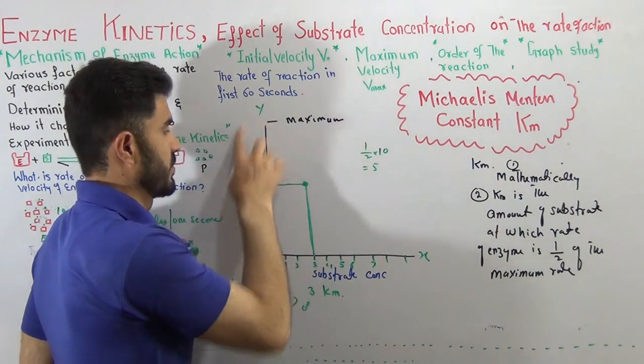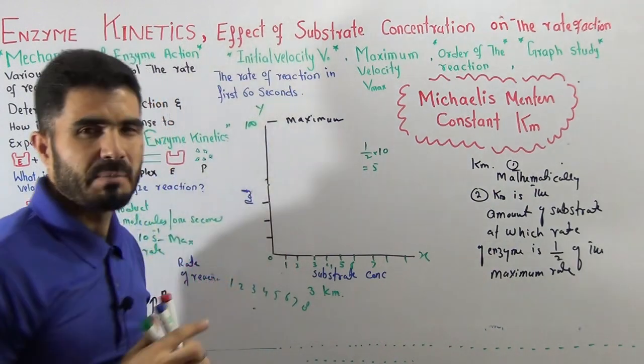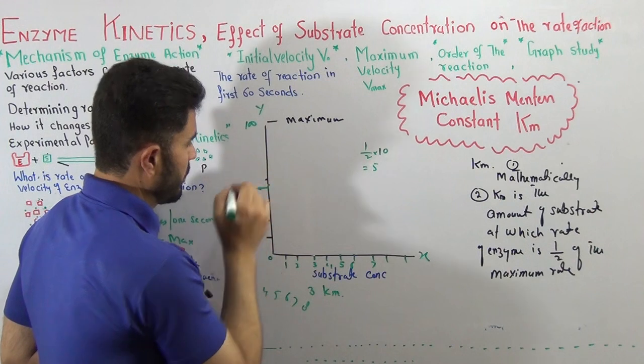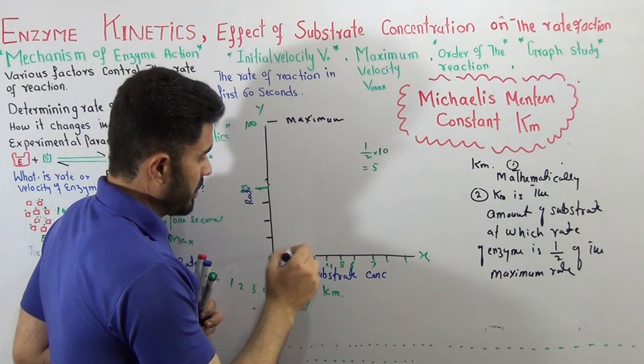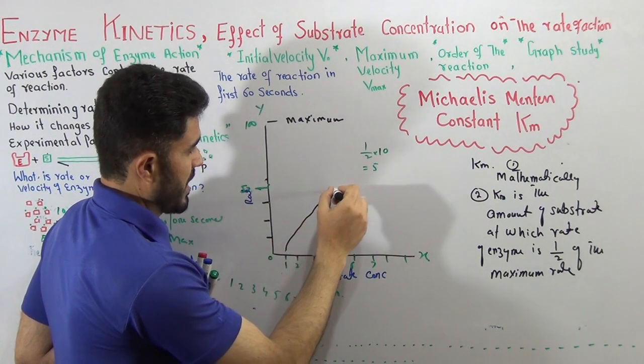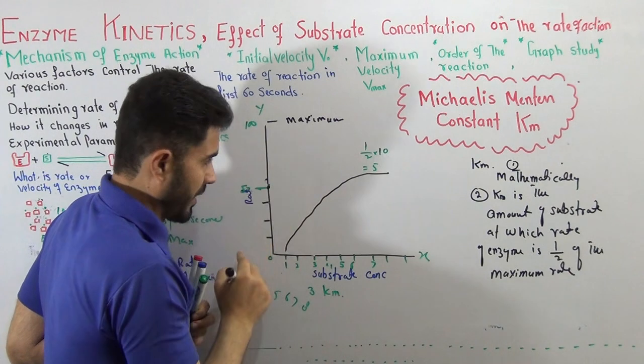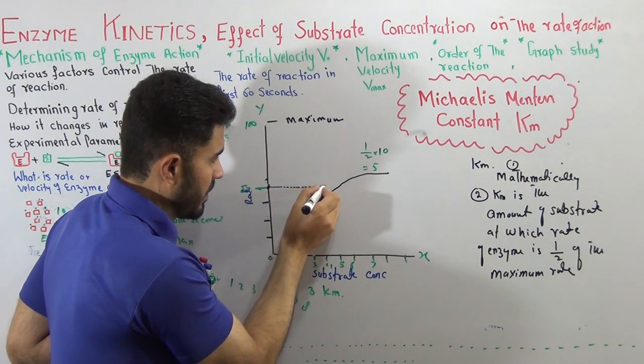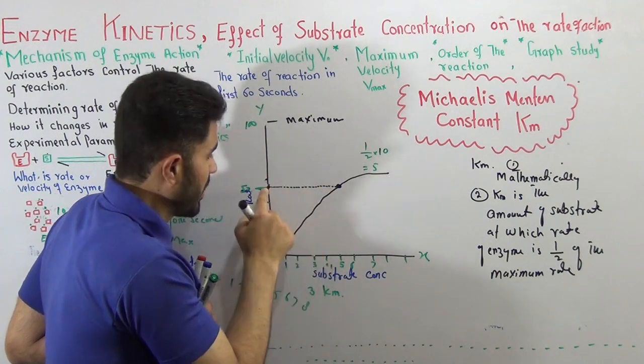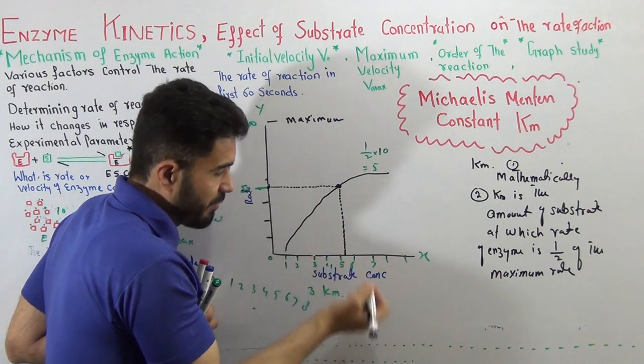Another example. Let's suppose you have another reaction and the maximum rate is 100. So half of this maximum rate will be 50. So 50 will be here. This will show the rate of 50. Now I am going to increase the substrate concentration from 1 to 2 to 3 to 4 to 5 to 6 to 7 to 8 to 9 to 10 and like this. Now I am going to touch this line at this point here. It is intersecting the curve here at that point.